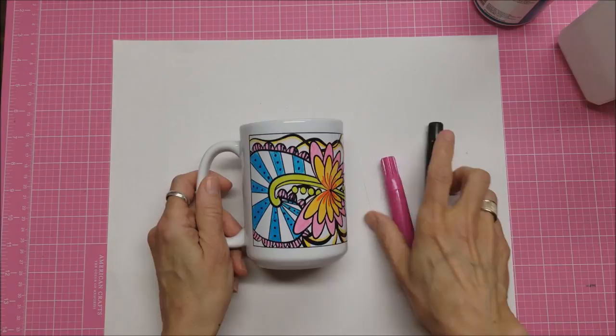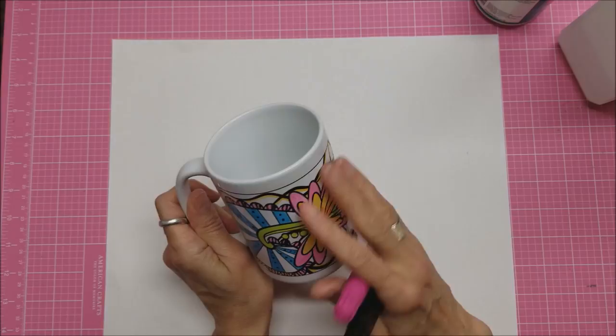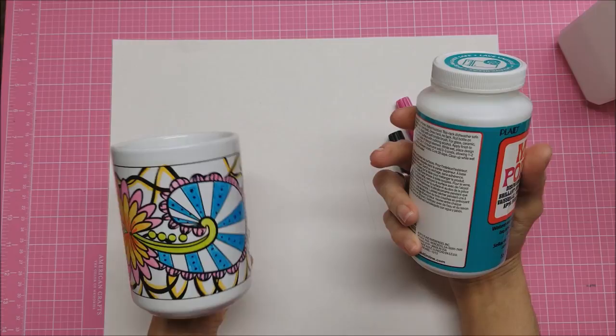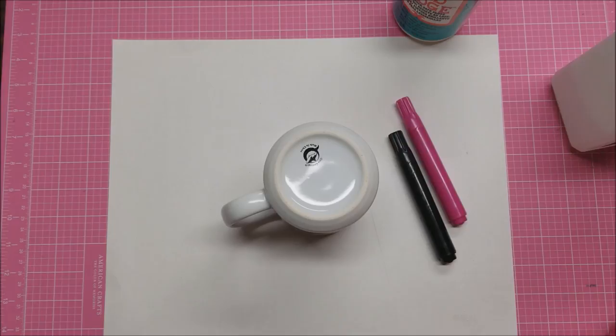They're ceramic markers and after two hours they are smudge proof and can be hand washed, but they're not dishwasher safe. So I began to wonder if we could use the Mod Podge dishwasher safe gloss on the mug to seal it and then make it dishwasher safe.